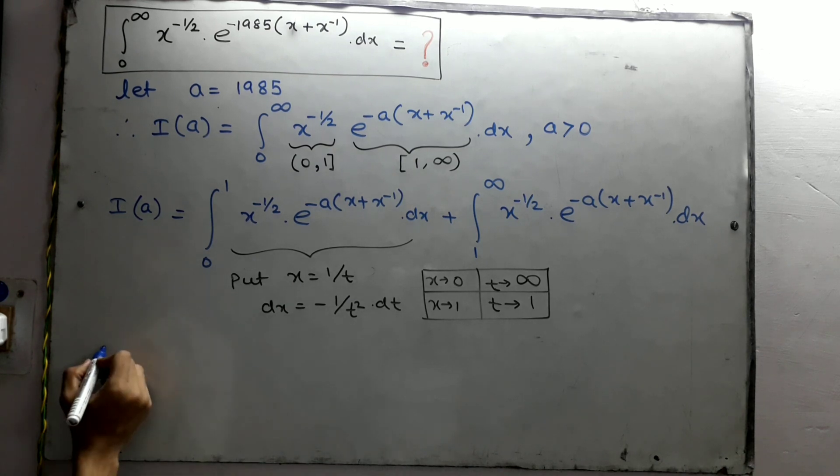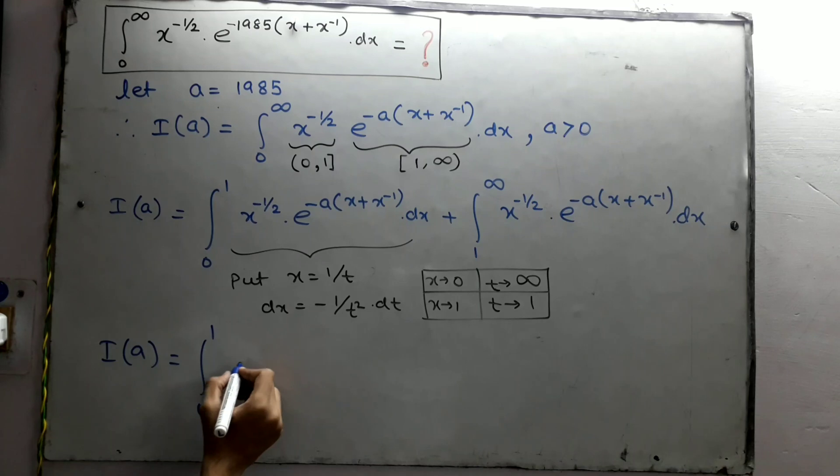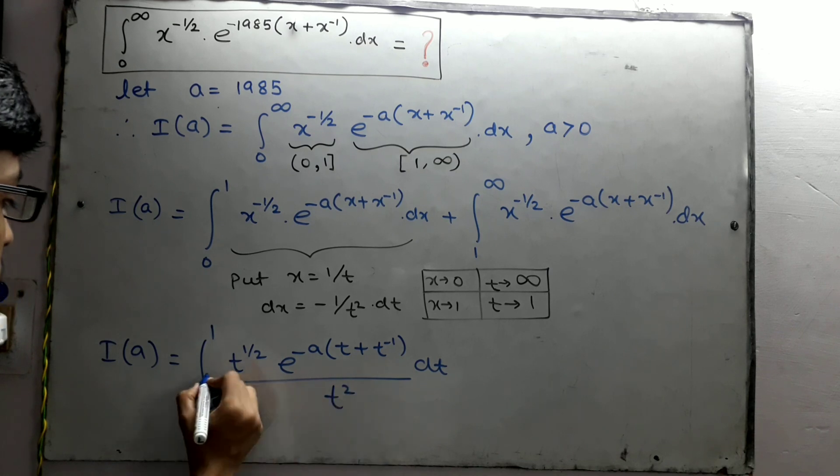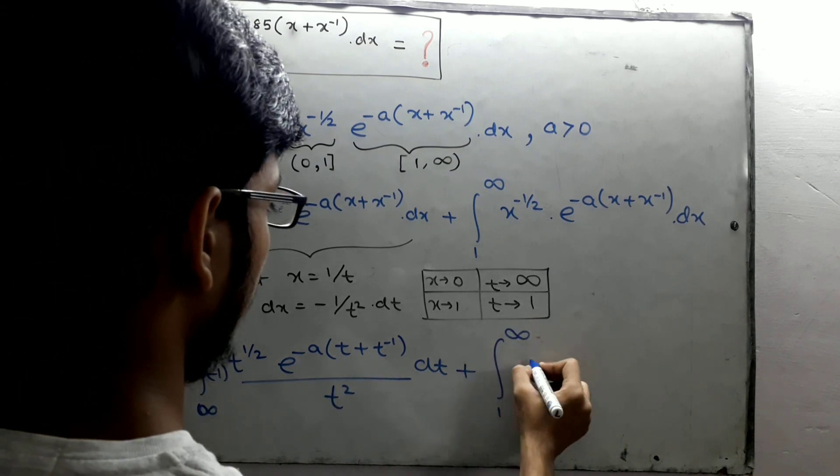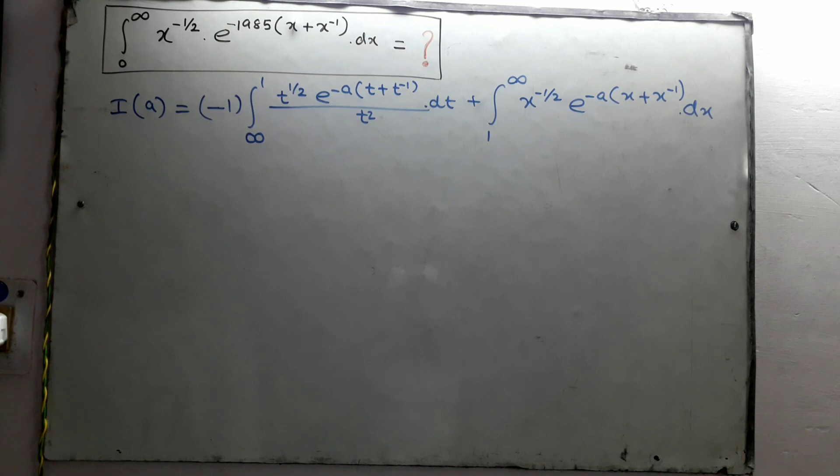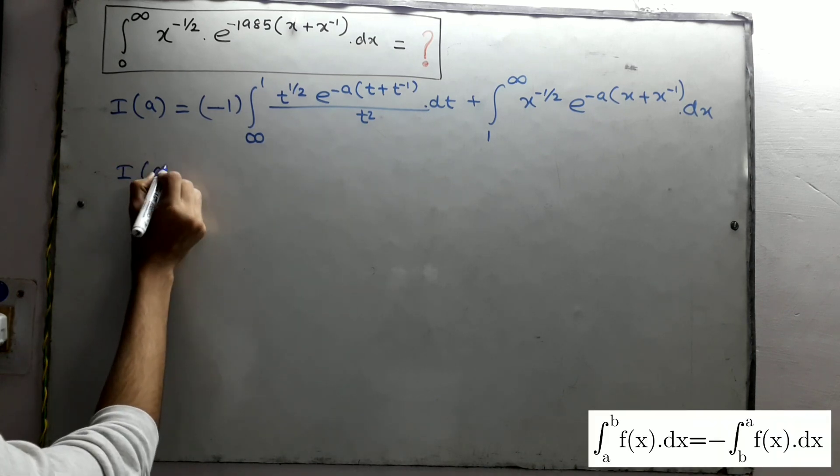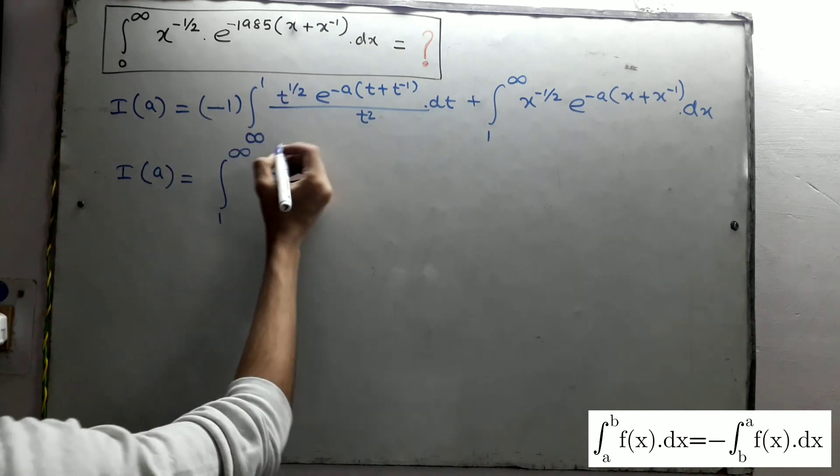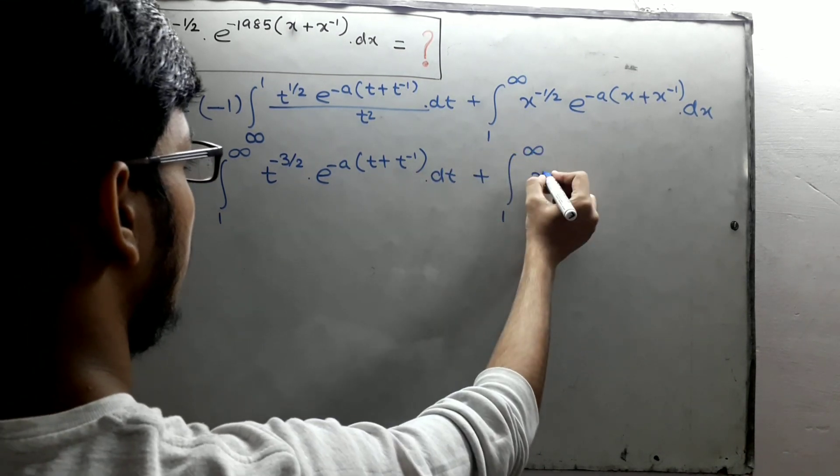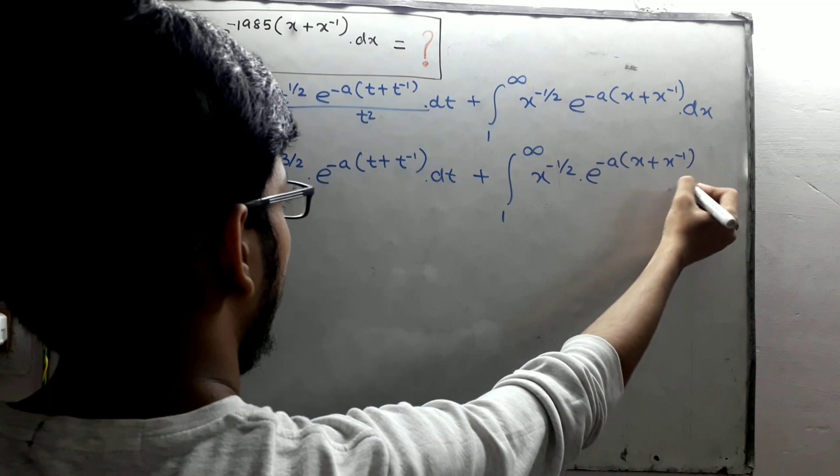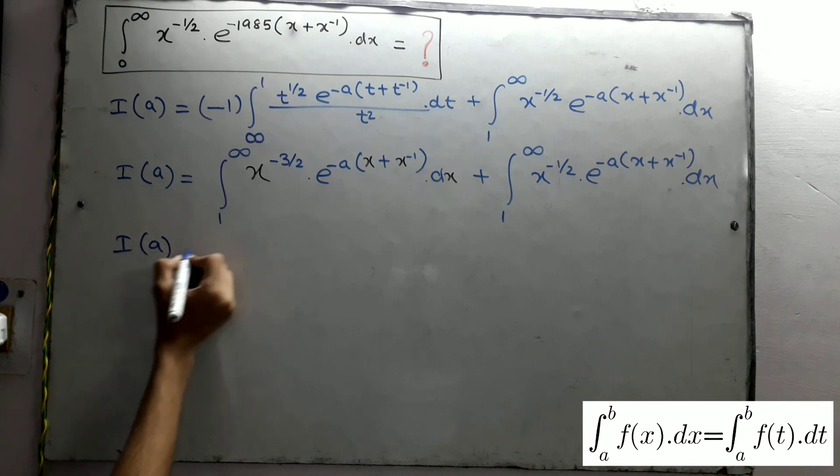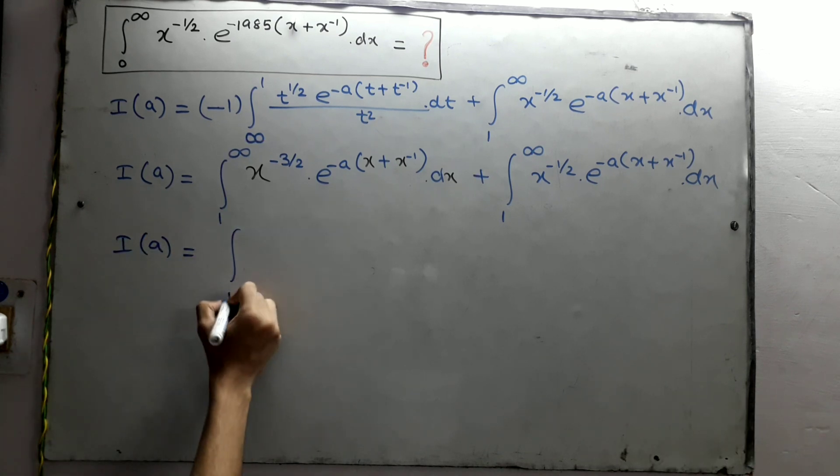Replacing all this, we get the transformed integral. Due to this negative sign in the first integral, the limit will be reversed by the property of definite integral. Now again, by the property of definite integral, we can replace the variable t by x. Now both the integrals have limits from 1 to infinity and the same variable, so we can add these two integrals.